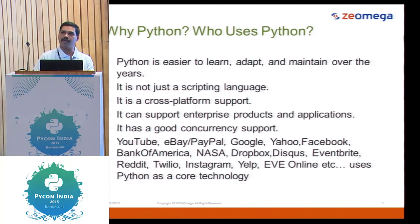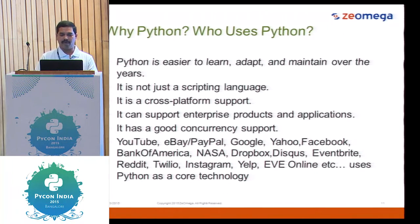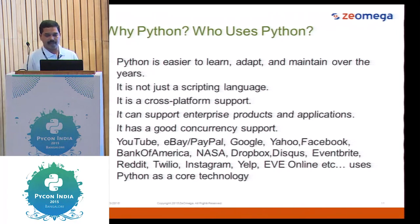Dollar is using Python. YouTube is heavily developed in Python — I think 90 percent of the code is in Python, with 100-plus Python developers working for YouTube. eBay, PayPal, and Google also use Python. On the commercial side, Bank of America uses Python as one of their core technologies, having almost 5,000-plus Python developers working there.